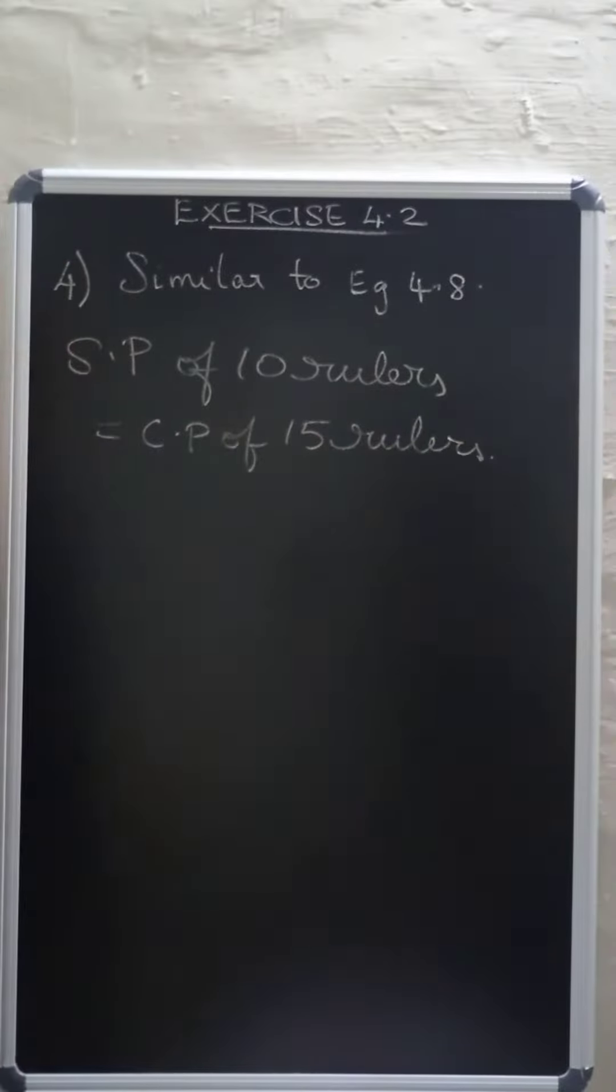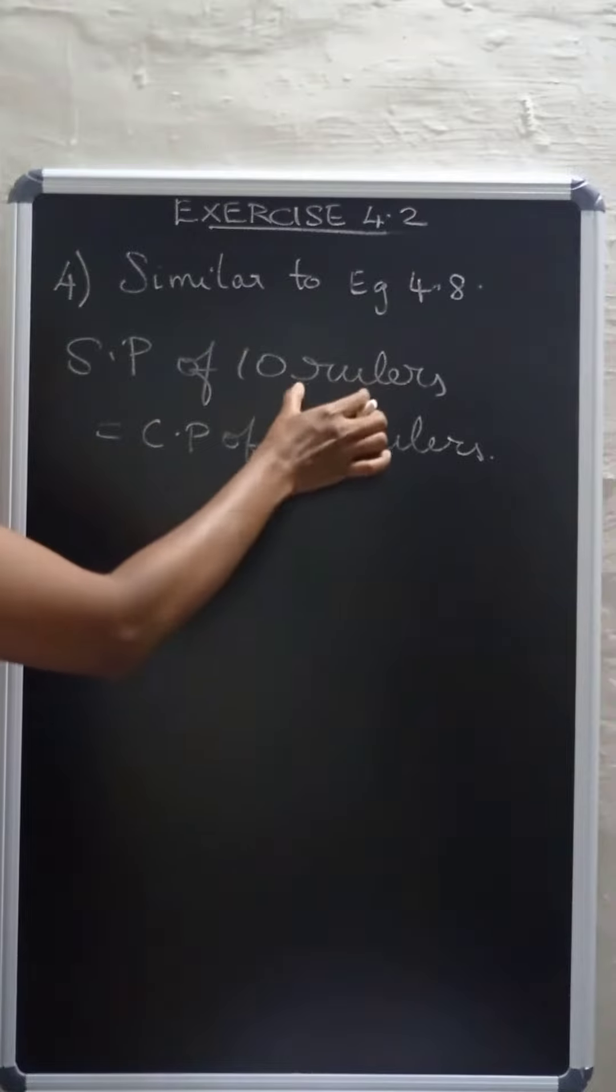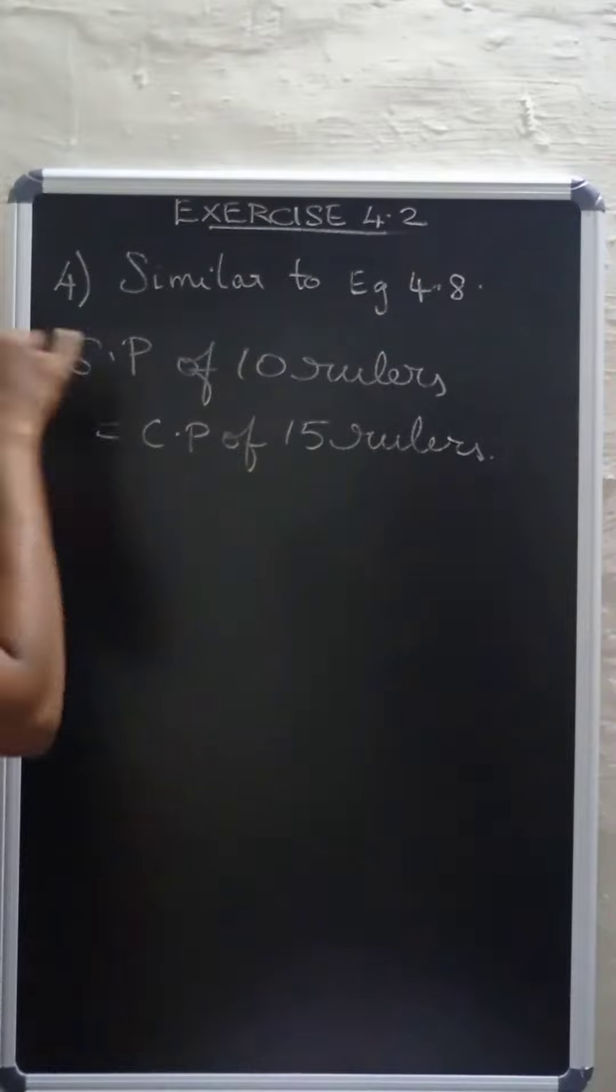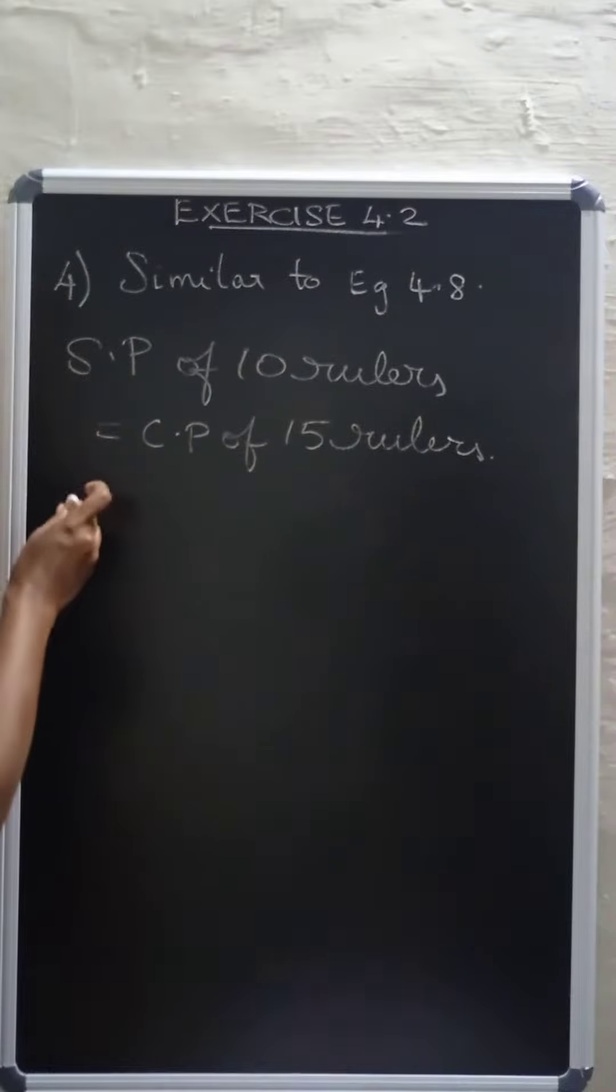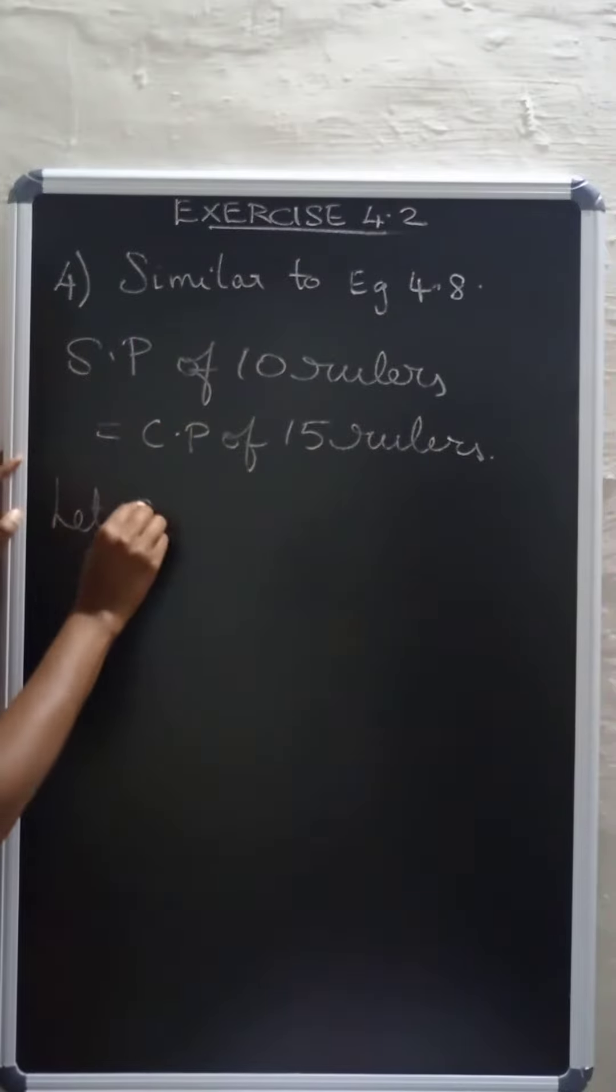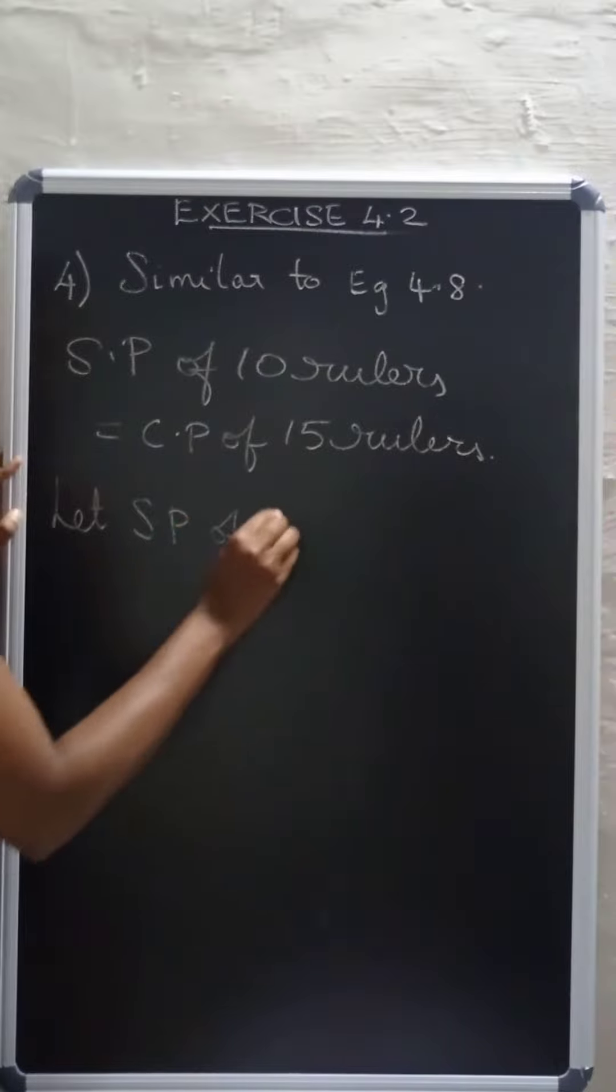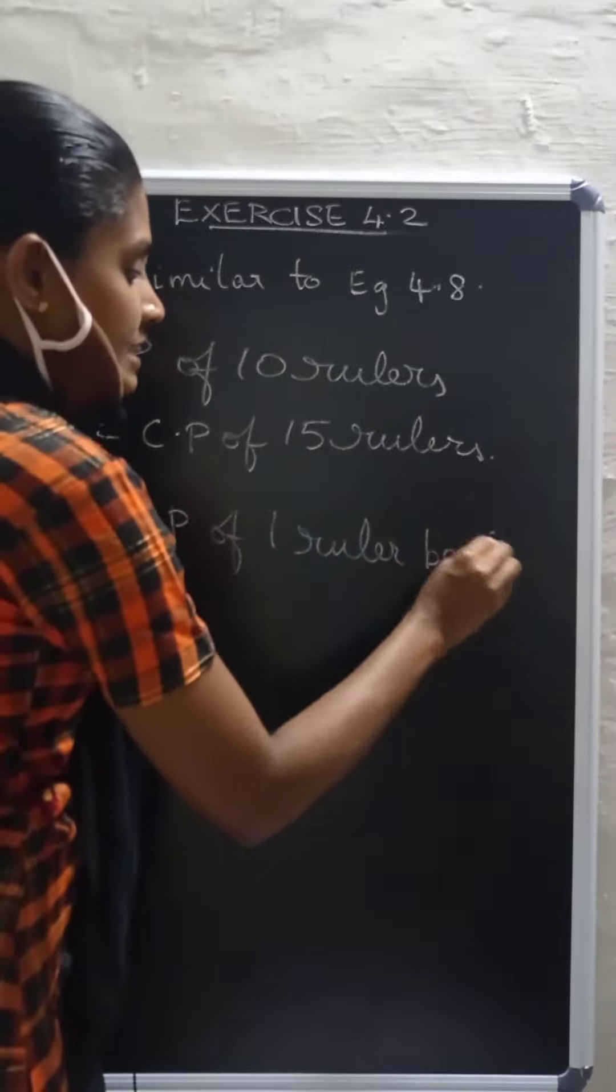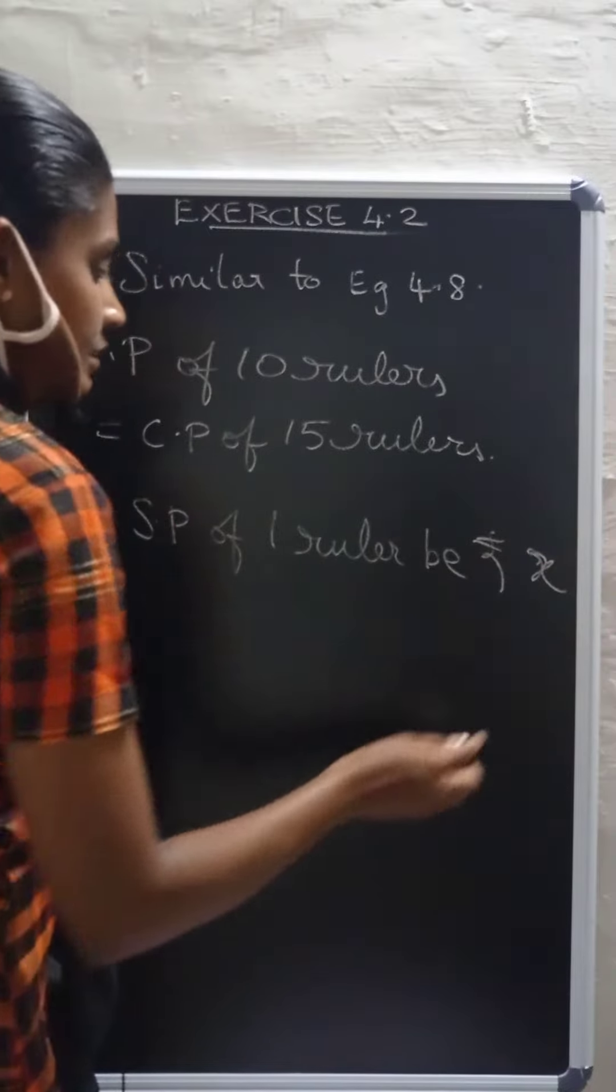Now, we have to find x. Let selling price of 1 ruler be rupees x.